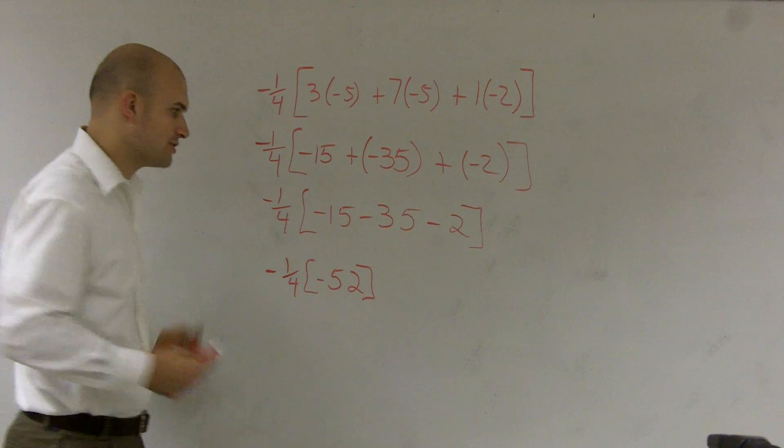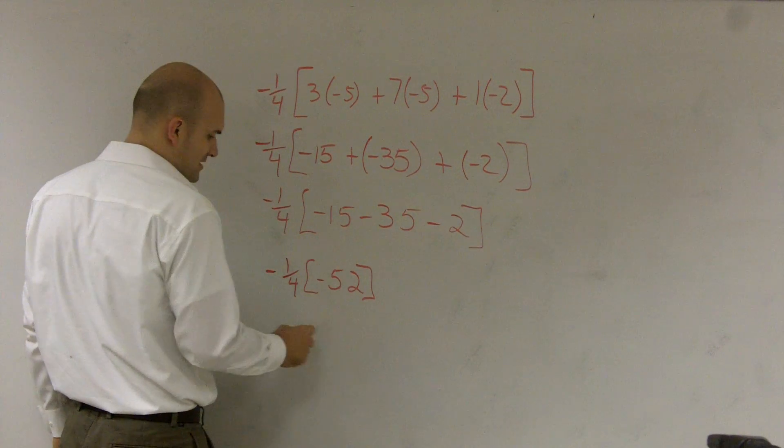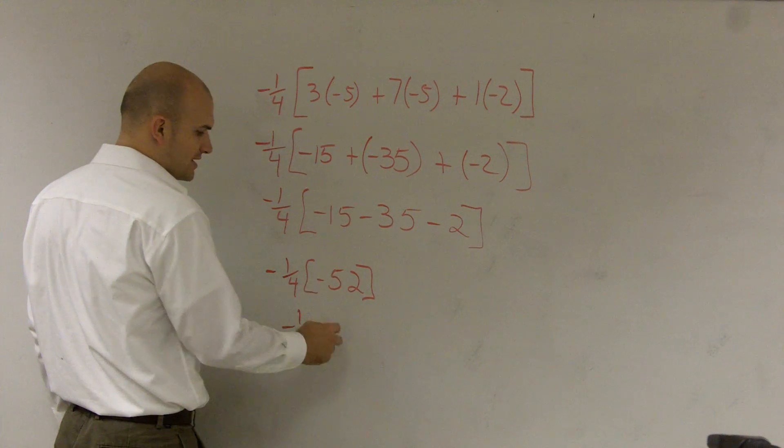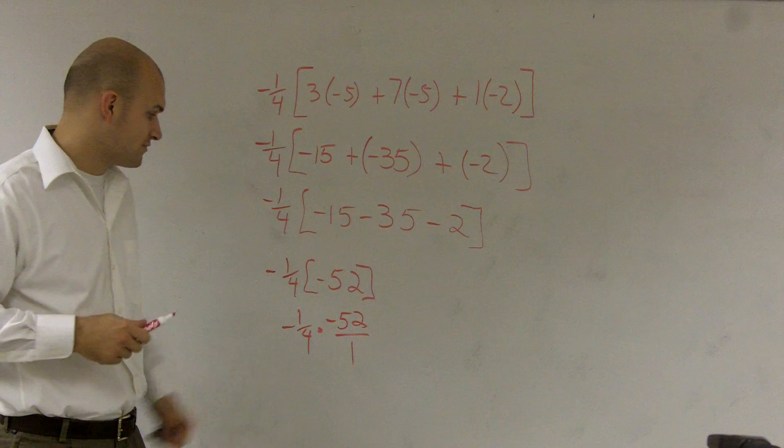How do you multiply a fraction times a whole number? Remember, -1/4 can be written as a fraction, and so can -52. You can write -52 as a fraction over 1.